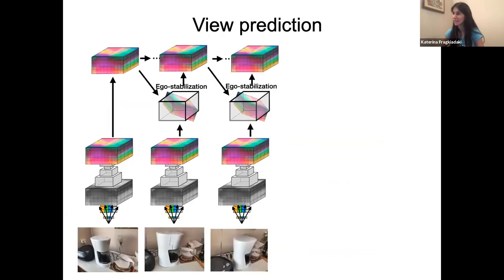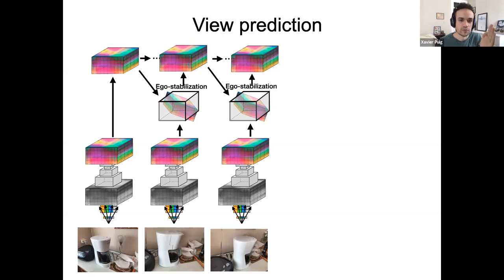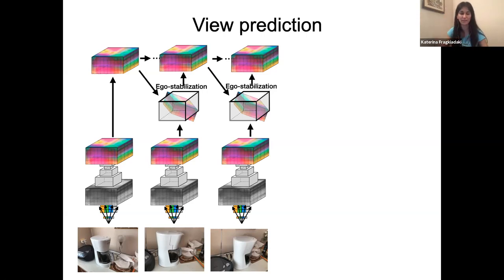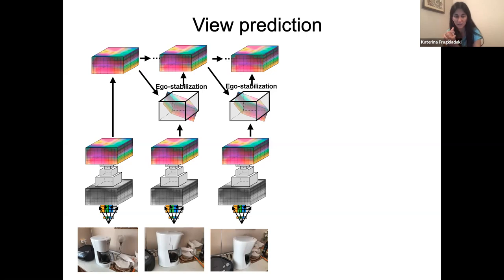A question about aggregation: you estimate 3D rotation and translation, transform the previous feature map so the coordinate systems agree, and then fuse them however you like — we've used 3D GRUs, averaging, and LSTMs. The important thing is first making sure coordinate systems agree. Averaging worked as well as LSTMs for what we show here and was five times faster. For moving objects, you need a separate feature map per moving object, tracking each one's location in the scene and updating it separately.